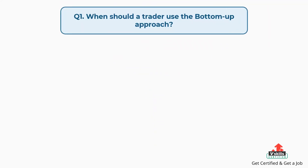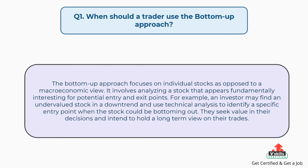Question number 1: When should a trader use the bottom-up approach? The bottom-up approach focuses on individual stocks as opposed to a macroeconomic view. It involves analyzing a stock that appears fundamentally interesting for potential entry and exit points. For example, an investor may find an undervalued stock in a downtrend and use technical analysis to identify a specific entry point when the stock could be bottoming out. They seek value in their decisions and intend to hold a long-term view on their trades.